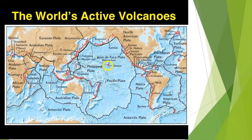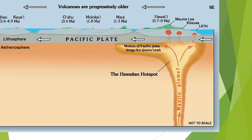However, there are some exceptions to the subduction-forming volcanoes. Kilauea, which is on the Hawaiian Islands, is an active volcano dead center in the Pacific plate. And the Cape Verde volcanoes off of Africa are also not on a plate boundary. And of course, the Galapagos volcanoes are not on a plate boundary either.